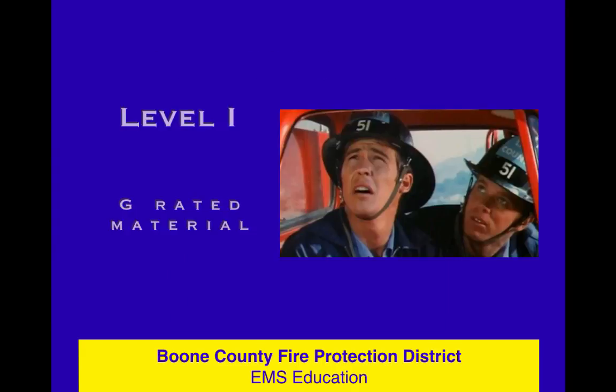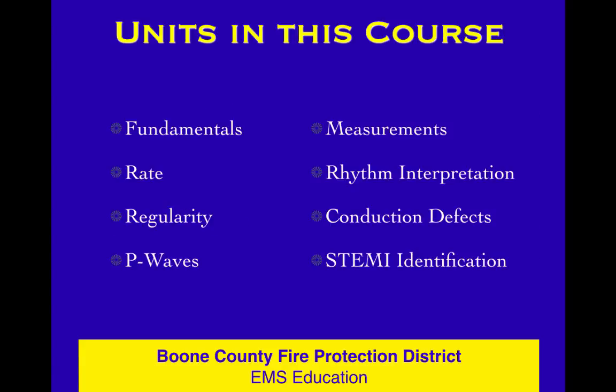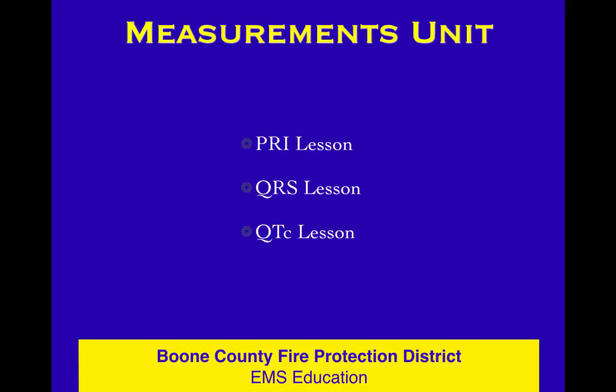We're halfway through the ECG course, still in level one. We've covered fundamentals, rate, regularity, and P waves as units. We've got four more units to go. This one is the first lesson in the measurements unit. We're going to talk about the PRI, the QRS, and QTC — the three things we do in measurements.